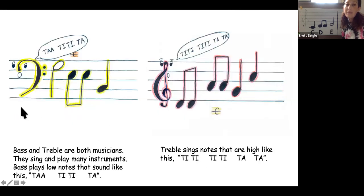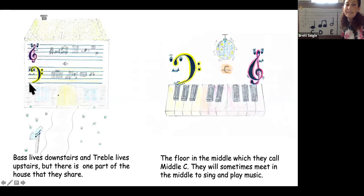Bass and treble are both musicians. They sing and play many instruments. Bass plays low notes that sound like this. Bass lives downstairs, and treble lives upstairs, but there is one part of the house that they share. The floor in the middle, which they call Middle C. A special line going through it.